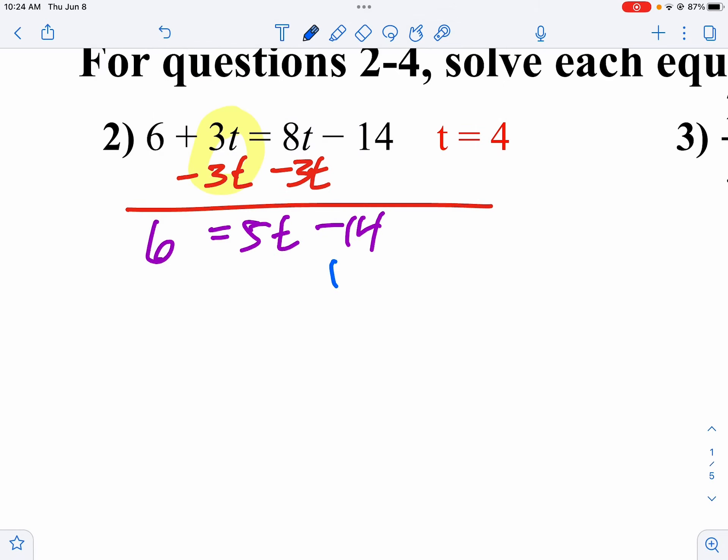So we're just going to add 14 to both sides. And 20 equals 5t. And once again, because the 14s cancel. Finally, divide both sides by 5. 4 equals t. And there's your answer.